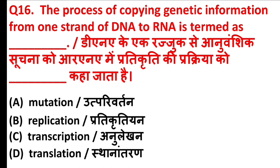The process of copying genetic information from one strand of DNA to RNA is termed as? The answer is Option C, Transcription.